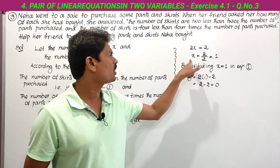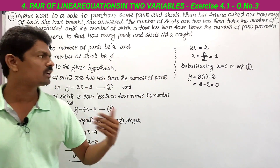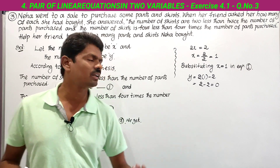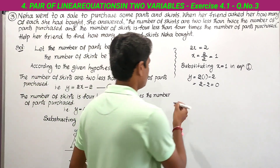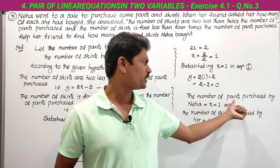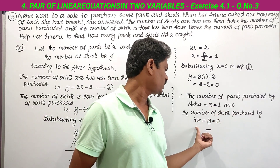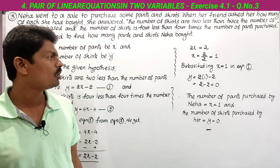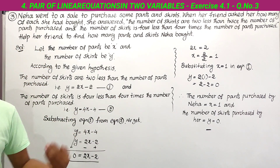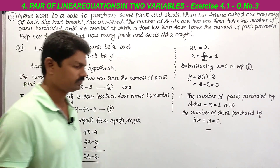x is the number of pants and y is the number of skirts. Therefore, the number of pants purchased by Neha is equal to x = 1, and the number of skirts purchased by her is equal to y = 0. So the number of pants equals 1 and the number of skirts equals 0. This is the solution to the third problem. Next we have to solve the fourth one. Thanks for watching!